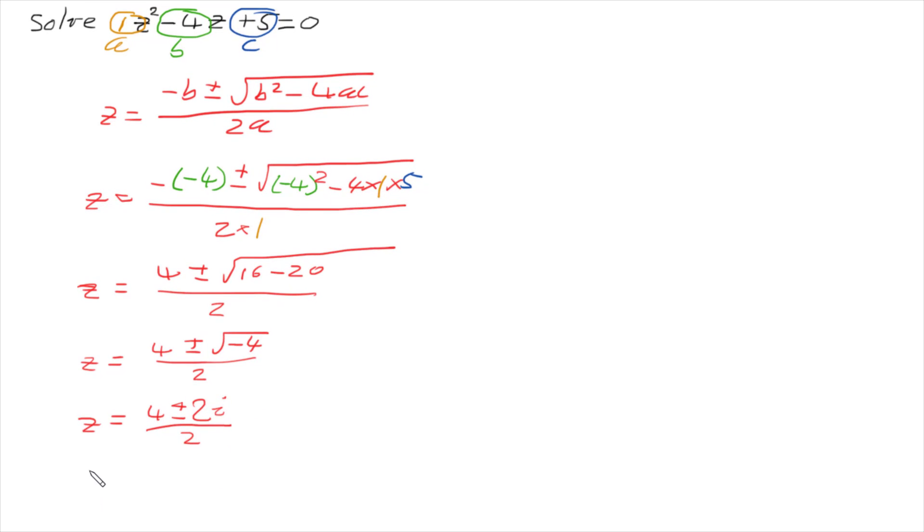And lastly, we just do that divide. So z is going to be 4 divided by 2 is 2 plus or minus 2 divided by 2, which is 1. So I won't write it, and we have i.